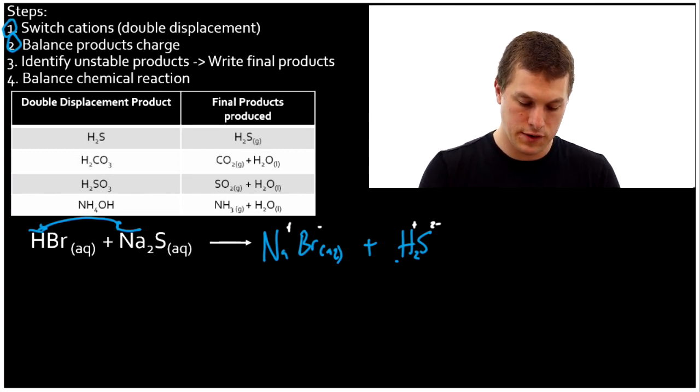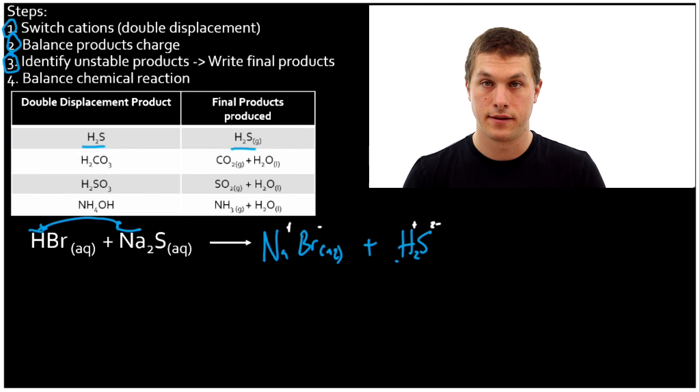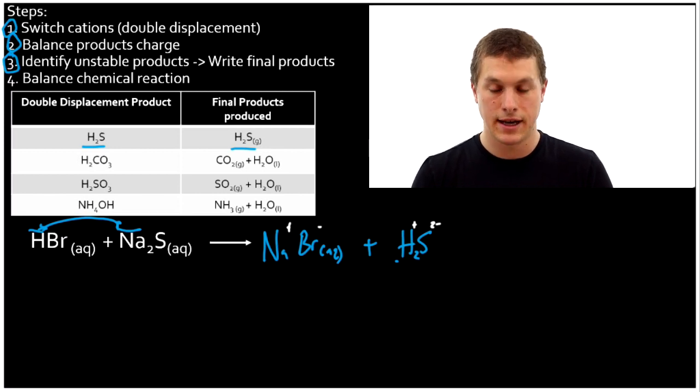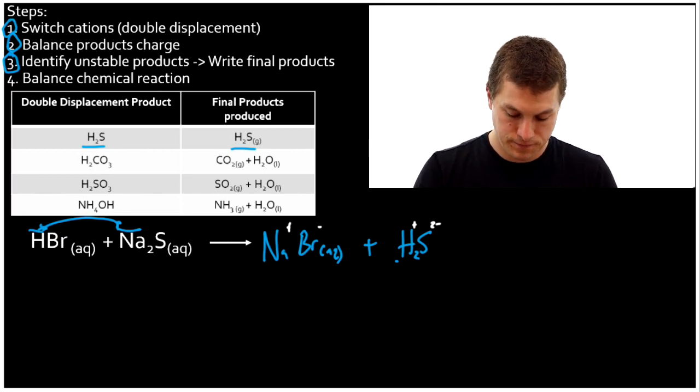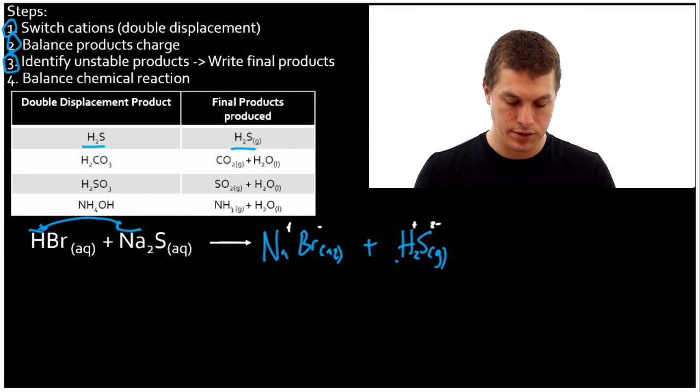Well, now let's go to step three. Identify any unstable products. Well, we don't have any unstable products, but we do have H2S, which is a gas. It's straight to a gas. There's no second step here. So that already is a gas evolution reaction. It's not balanced though.